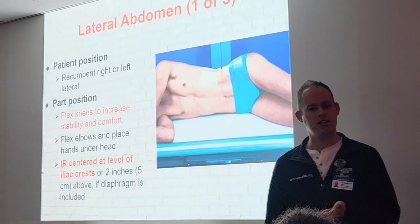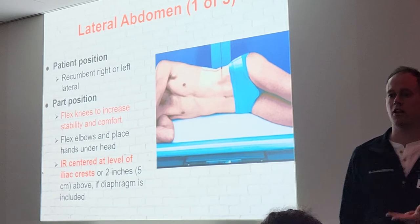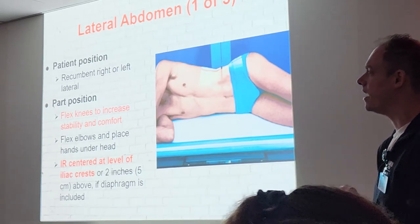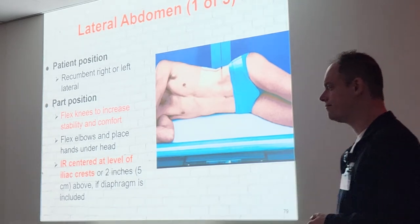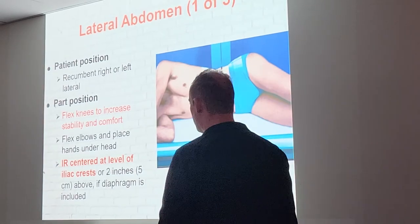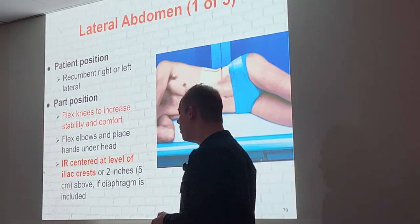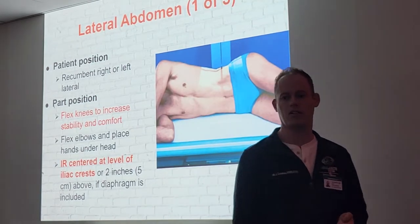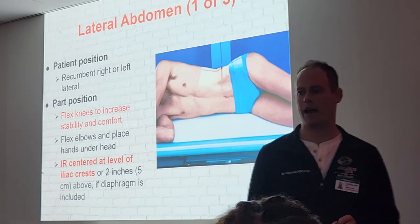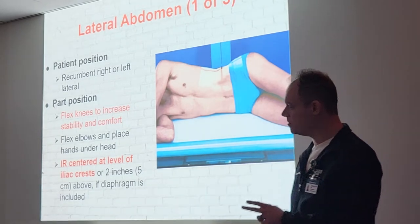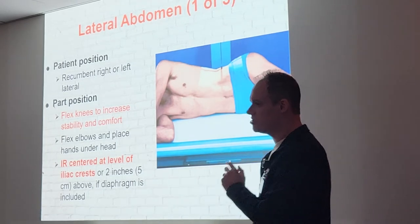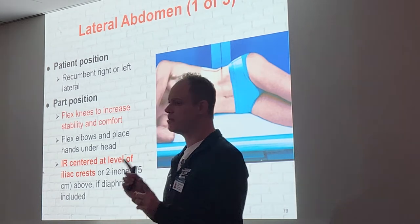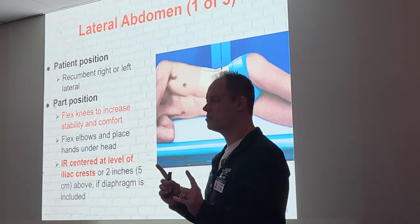For positioning, it's basically like the decubitus: on the side, knees bent and stacked on top of each other for stability, arms up above the head. But the IR and central ray are at the level of the crest for the regular lateral abdomen — compared to the lateral decubitus, which is two inches above the crest. Similar views, but make sure you know the difference.